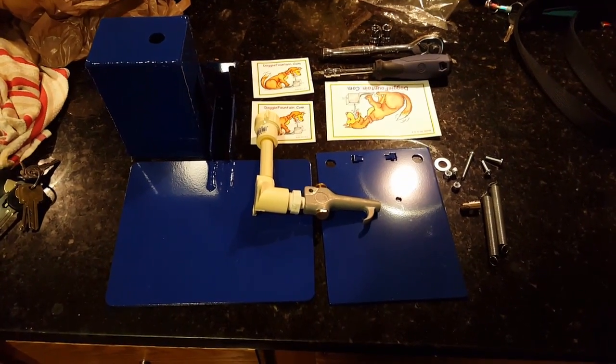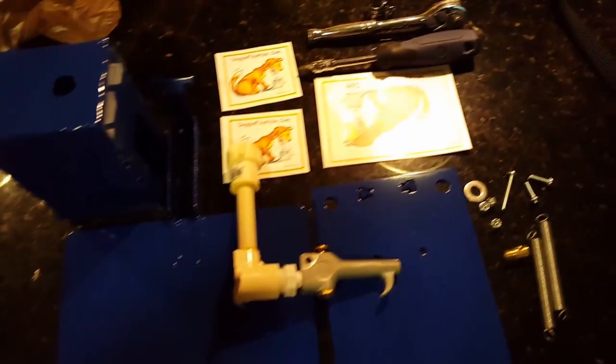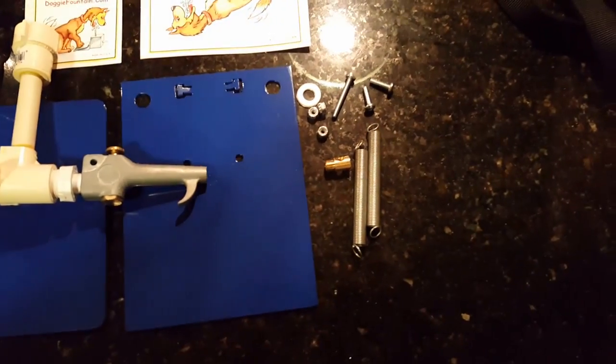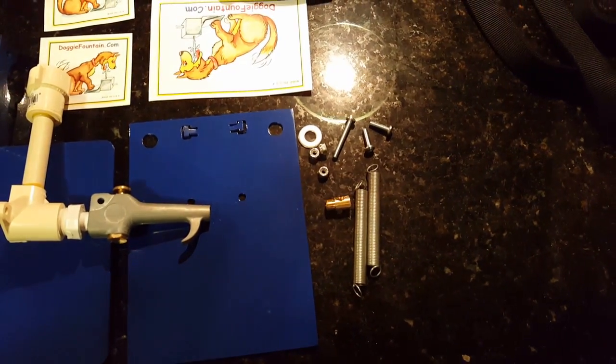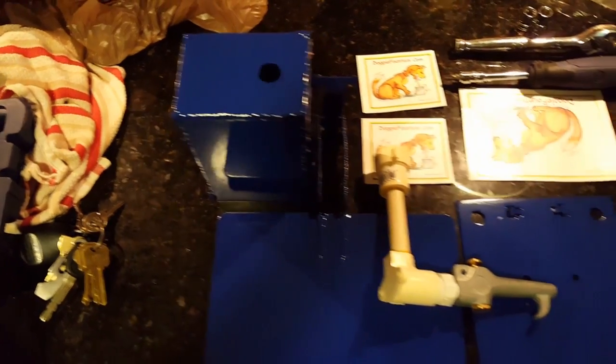Here are all the parts that come with the kit. You have your valve, springs, screws, nylock nuts, washer, along with the base plates and the cover for the valve itself.